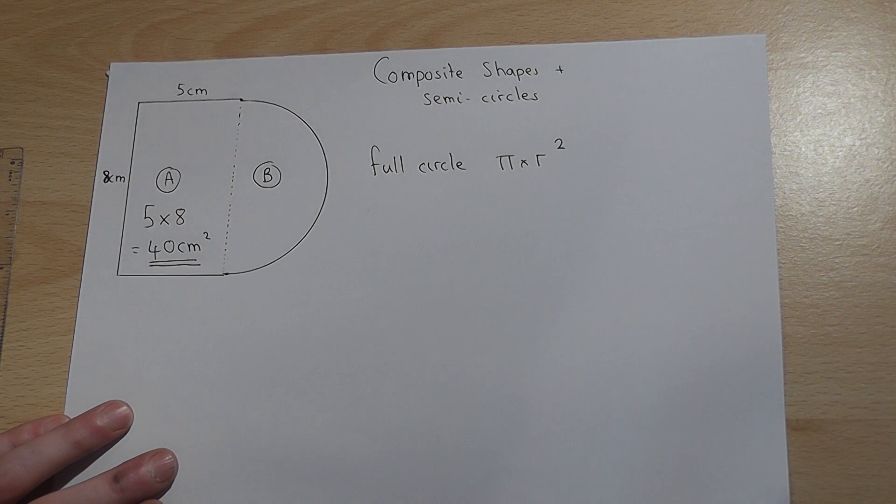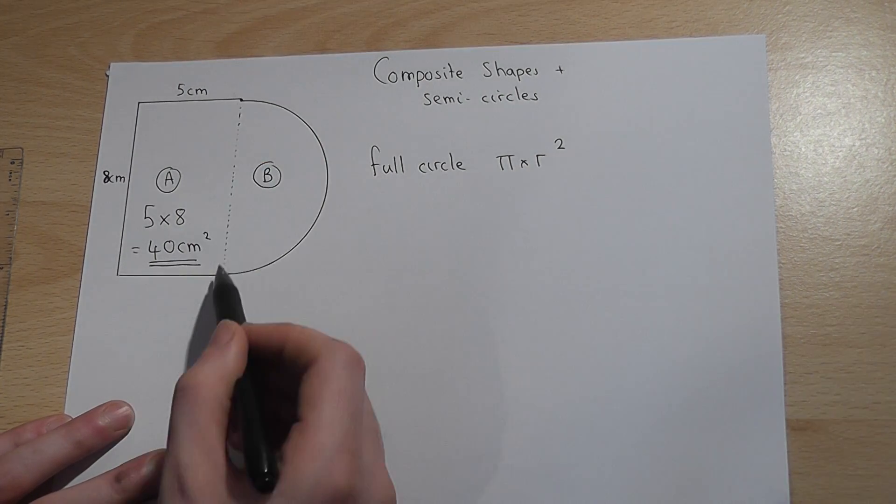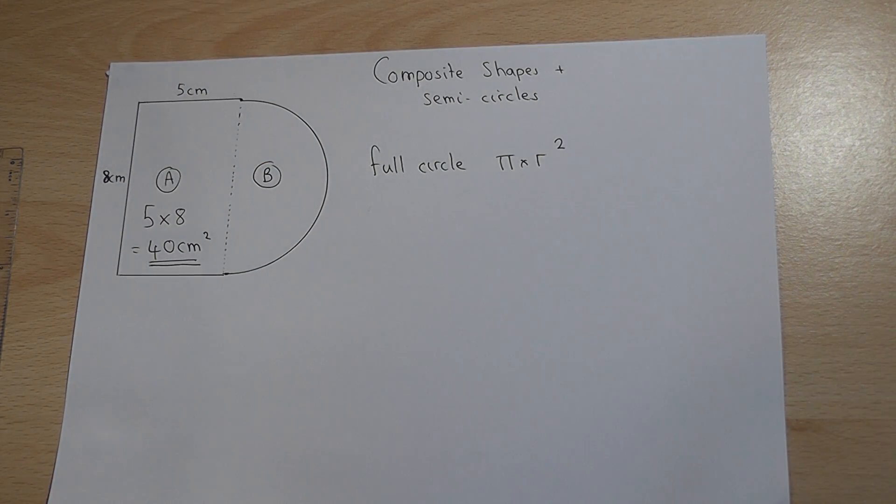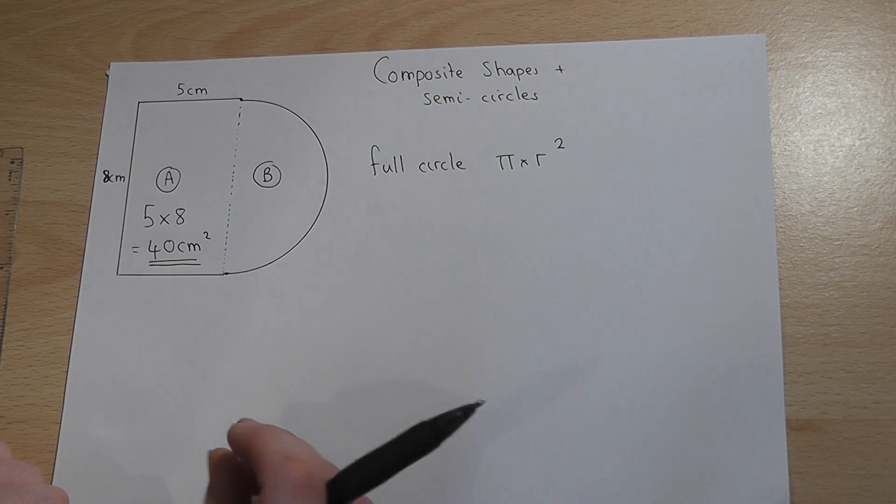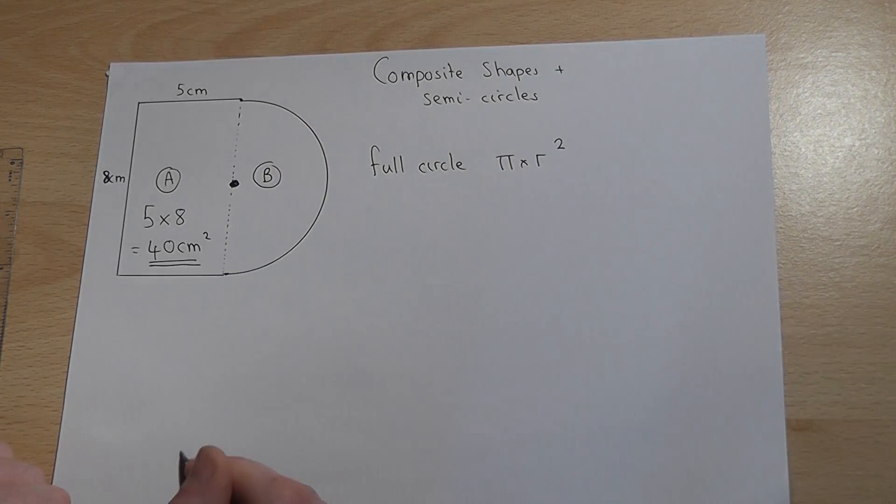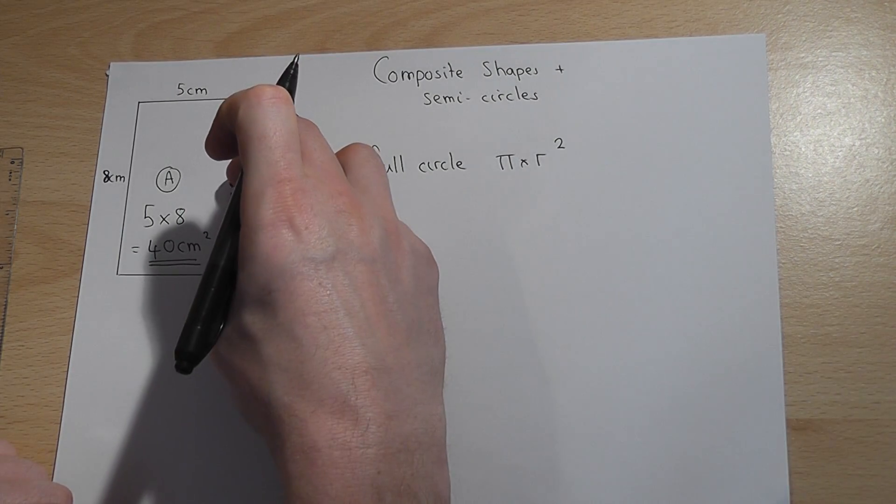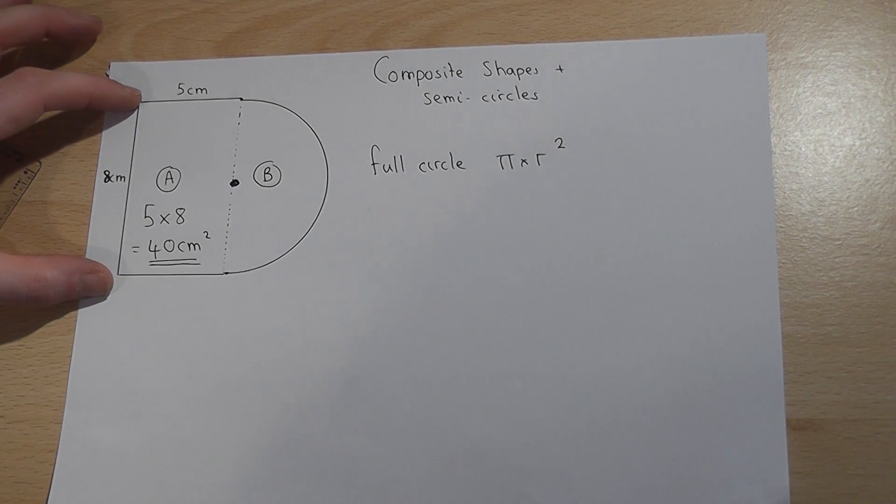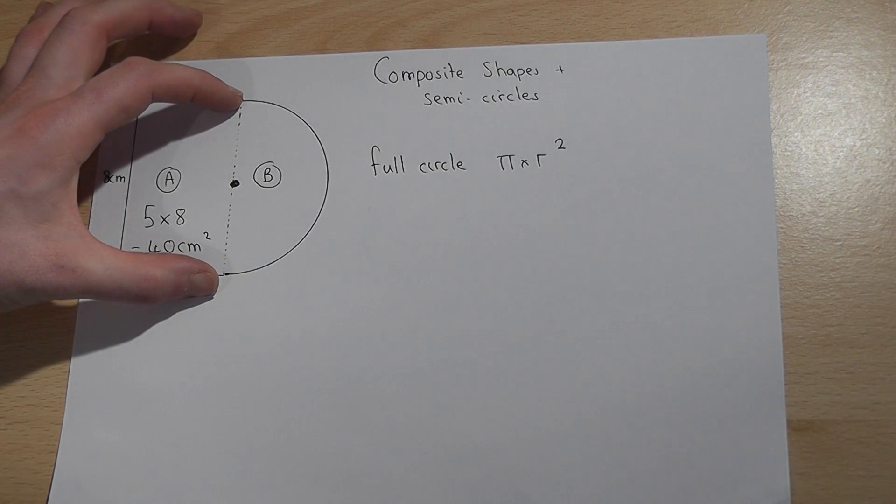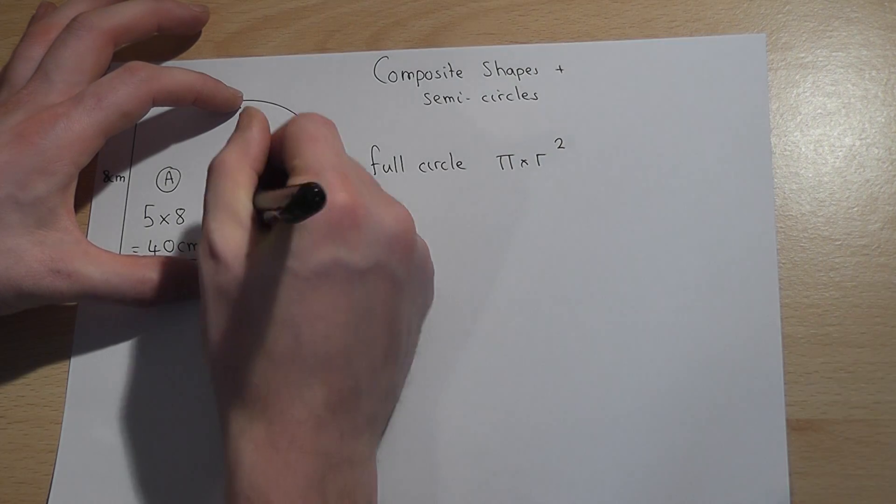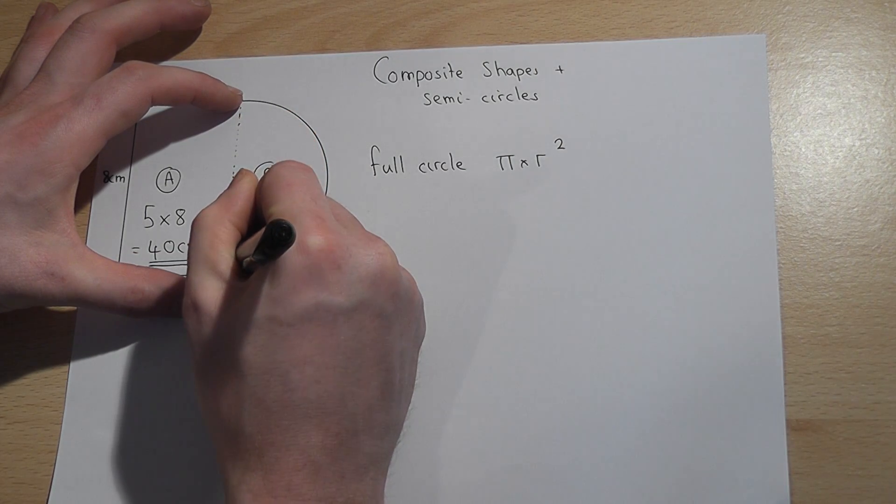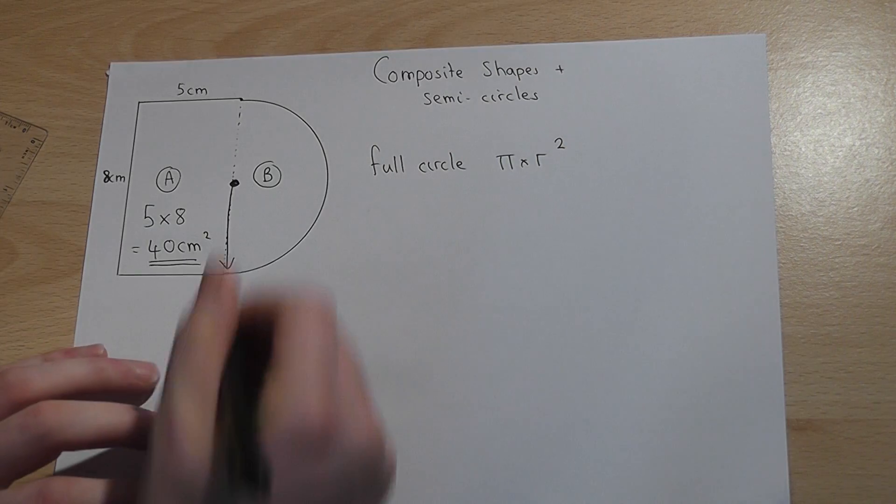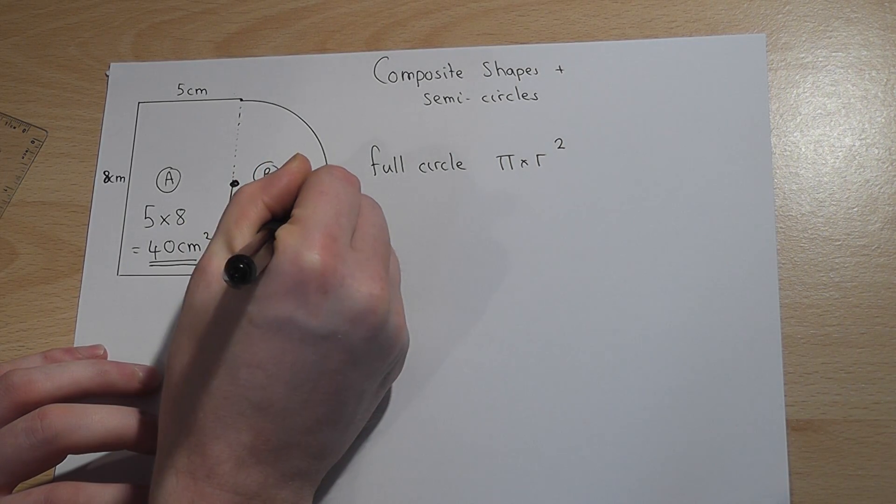Now then the question really is what is the radius of this particular shape where the radius is basically the distance from the center if it was a full circle to the outside. Because the whole length of that rectangle there equals eight we therefore know the radius which is that length must equal four centimeters.